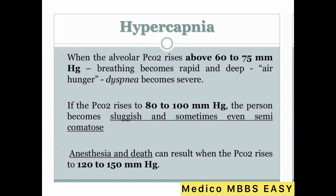When the alveolar partial pressure of carbon dioxide rises above 60 to 75 mmHg, breathing becomes rapid and deep, and air hunger — dyspnea — becomes severe. If the partial pressure of carbon dioxide rises to 80 to 100 mmHg, the person becomes sluggish and sometimes even semi-comatose.